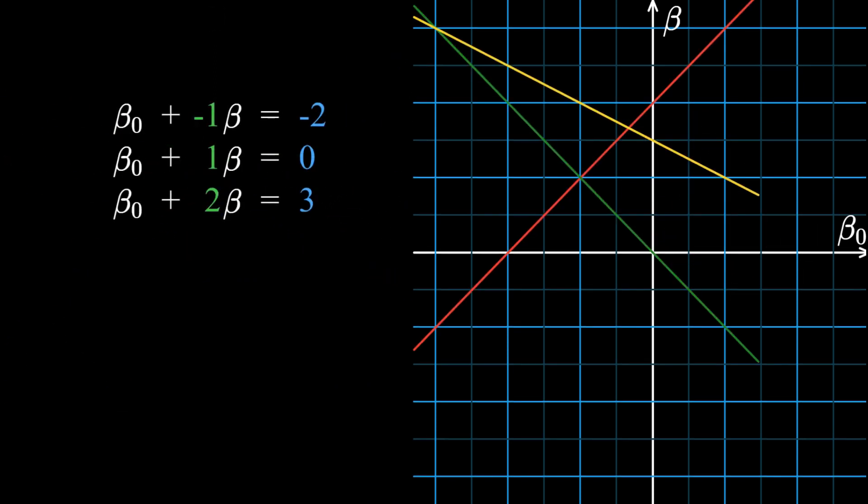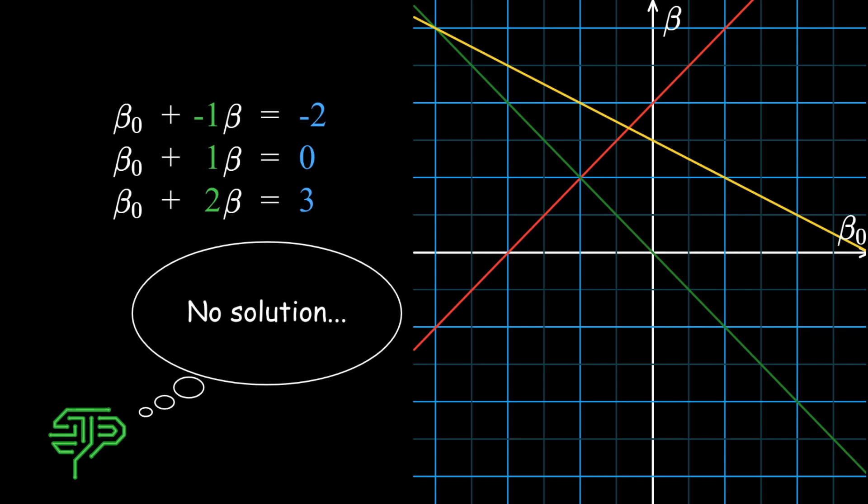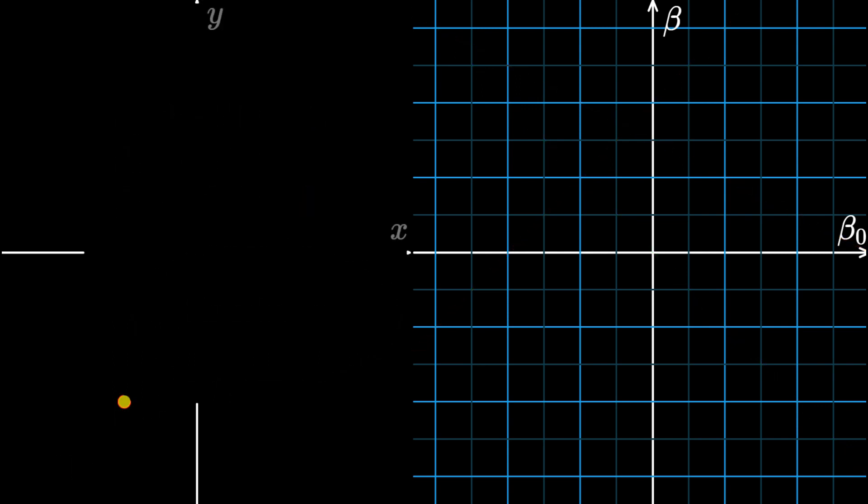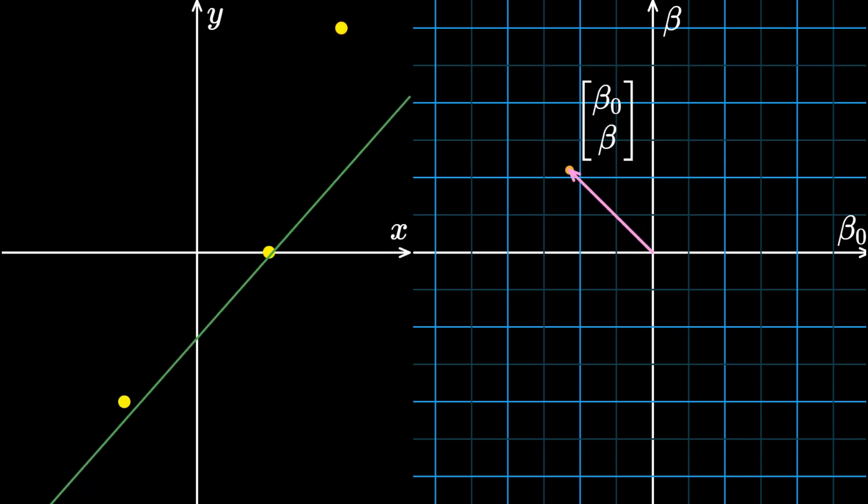The three lines right here have no common intersection point. In other words, there is no point that all three lines pass through. So, there are no solutions to the original system of equations. This corresponds to the fact that we cannot find a line that simultaneously goes through all of the three points on the plot.